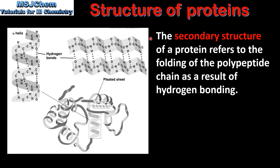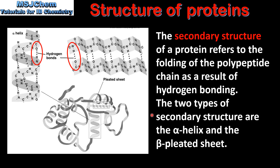The secondary structure of a protein refers to the folding of the polypeptide chain as a result of hydrogen bonding. Here we can see the hydrogen bonds between the oxygen and the hydrogen atom. The two types of secondary structure are the alpha helix and the beta pleated sheet.